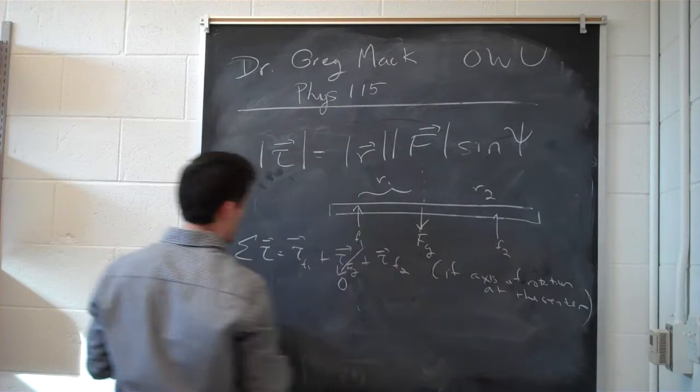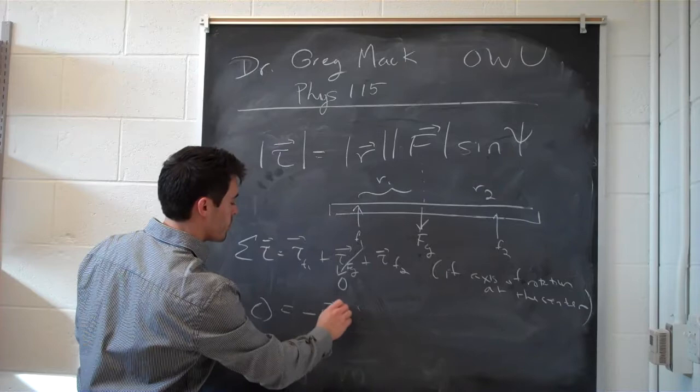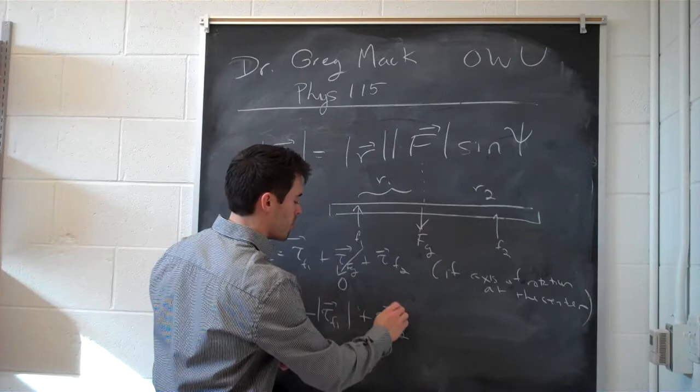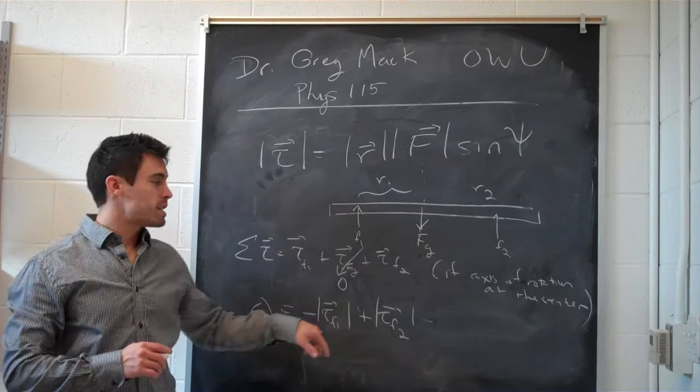That means it's going to be a negative torque. So zero equals negative torque of f1. For this one, fingers in r, curl them in f—f2 has a positive torque. So zero equals negative torque of f1 plus torque of f2, which tells you that the torque of f2 has to equal the torque of f1.